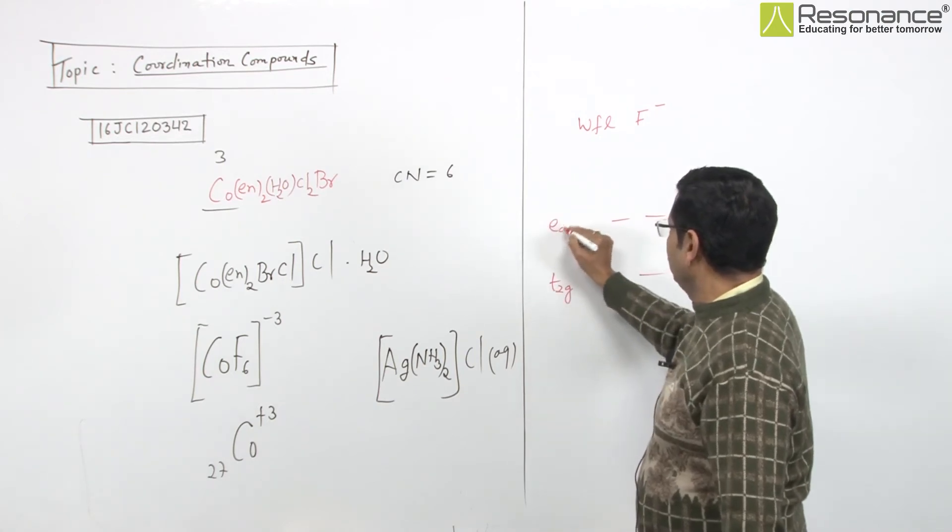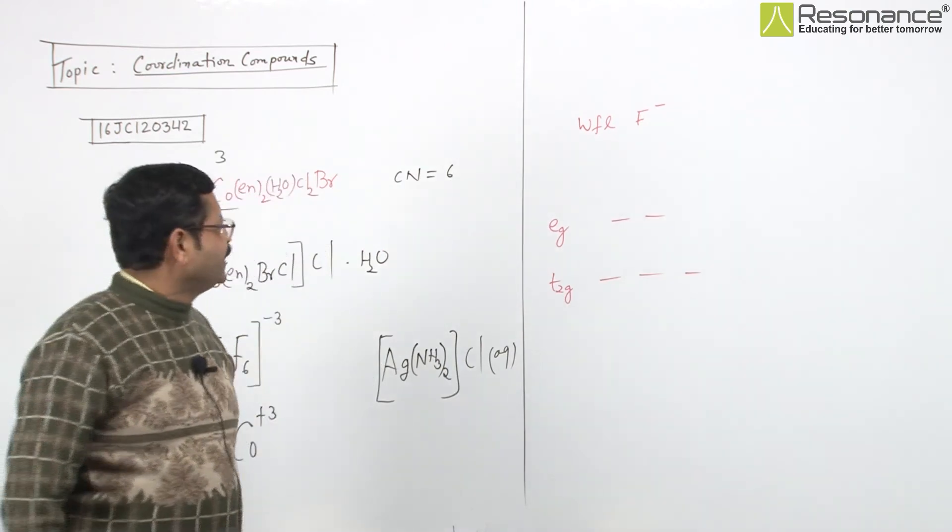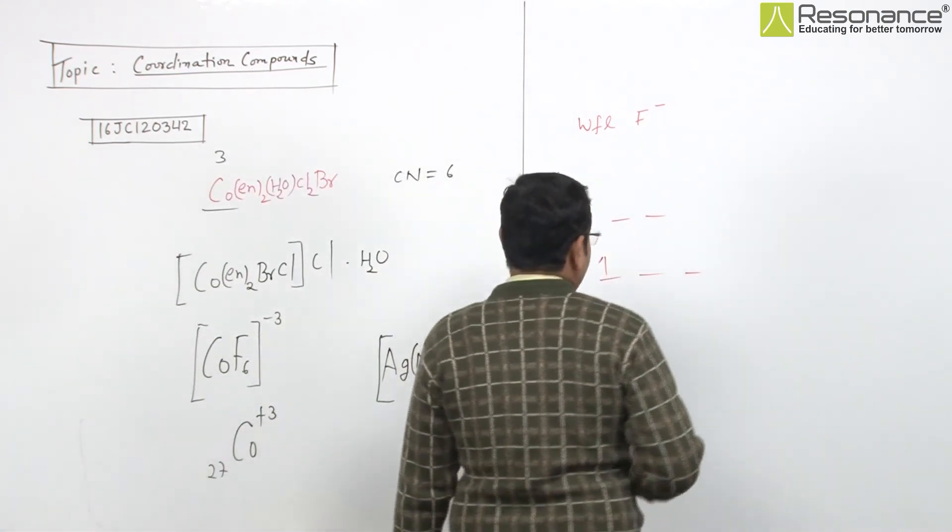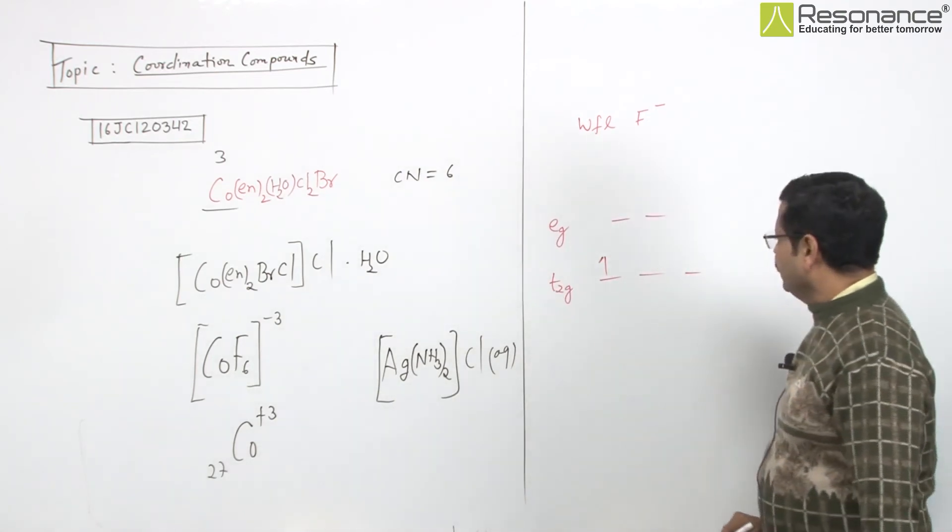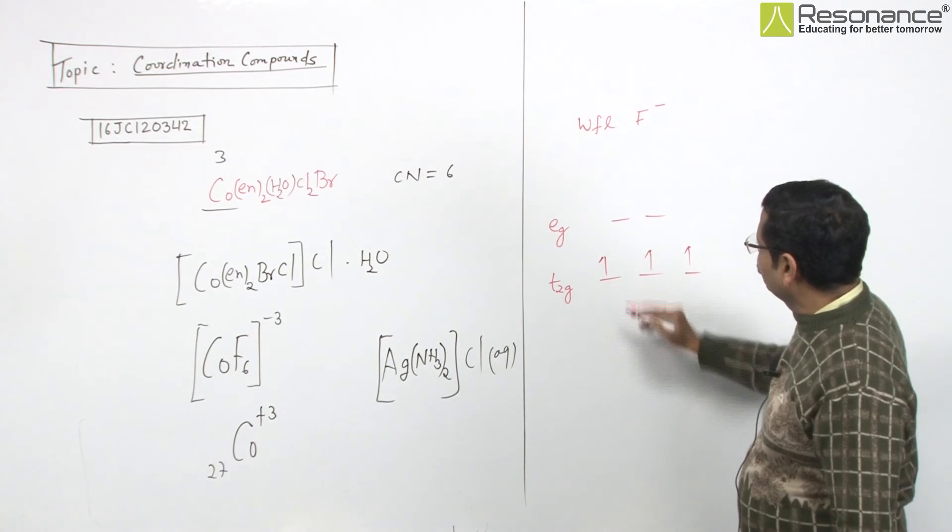With fluoride, t2g eg splitting is low. Your delta or crystal field splitting energy is small, so electrons can easily cross the energy barrier and go up.